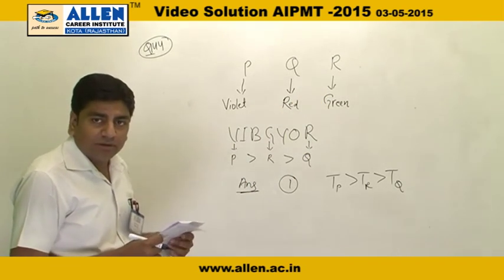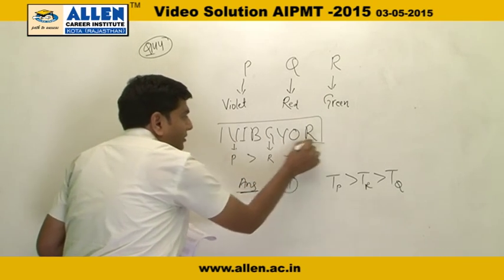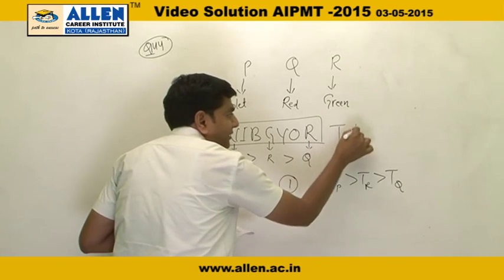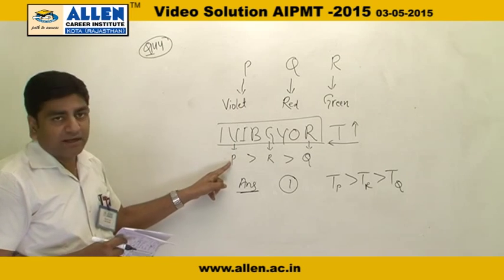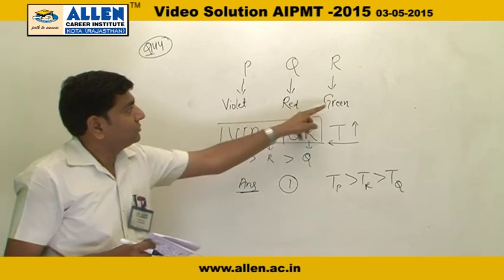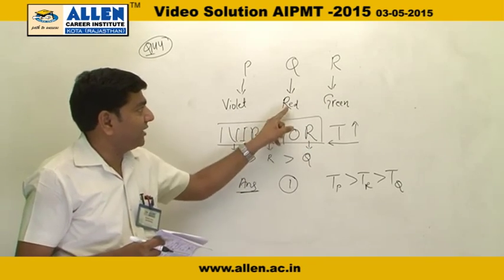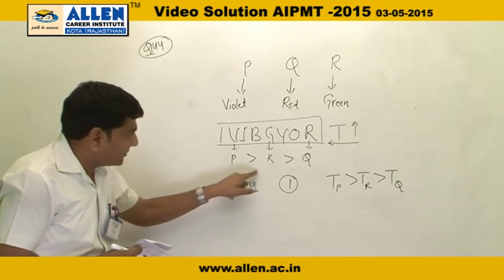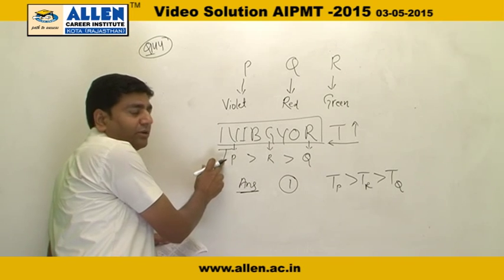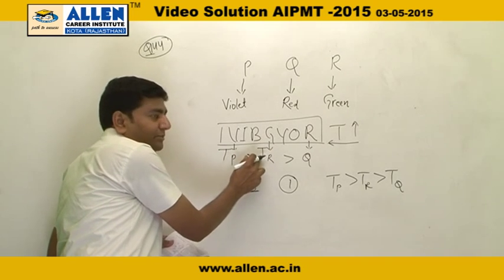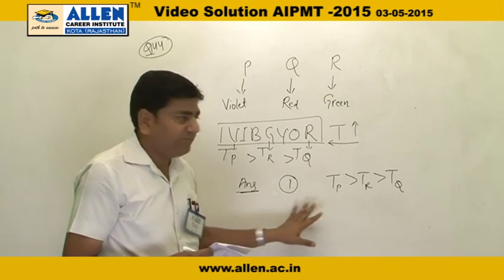What is the order? The temperature increases as we go in this direction. The peak color increases the temperature, then R increases the temperature, and Q decreases the temperature. Therefore, the answer is the first option.